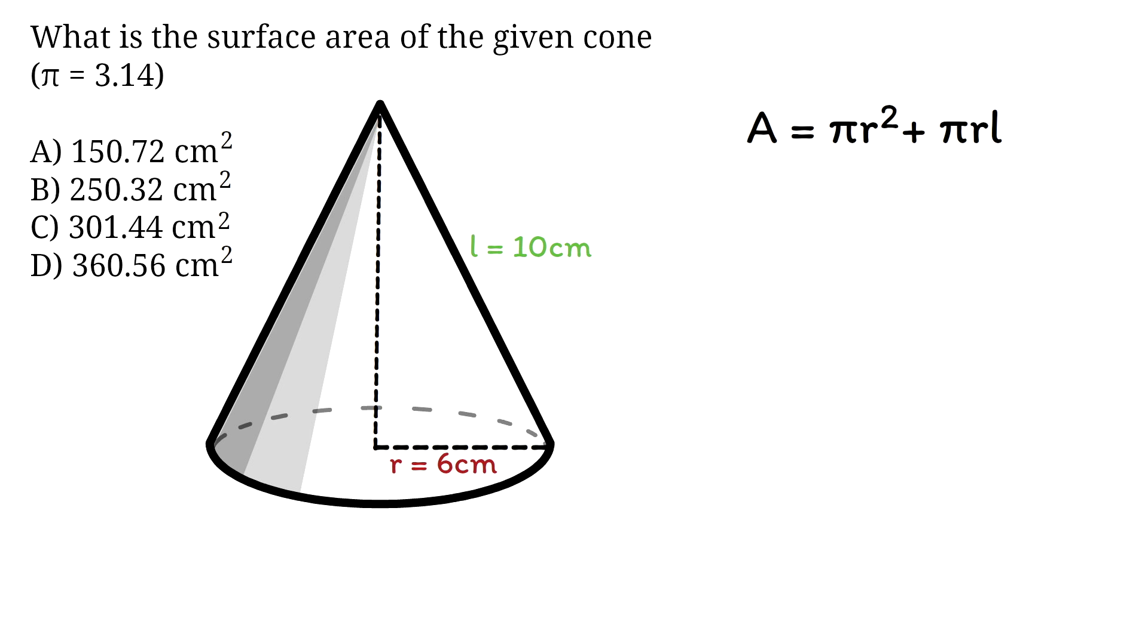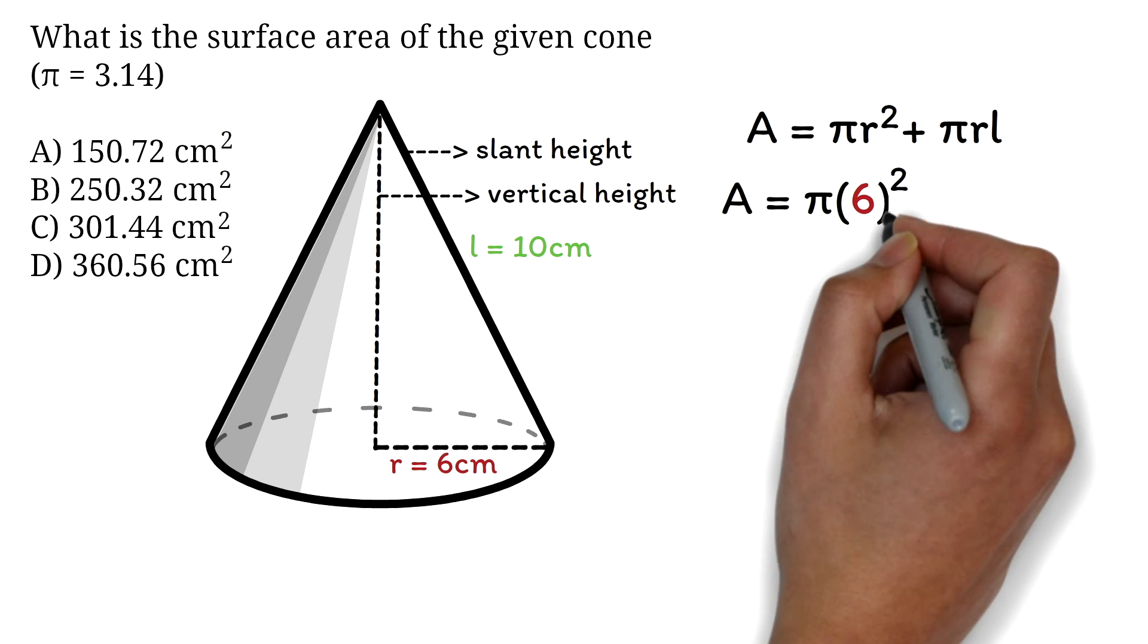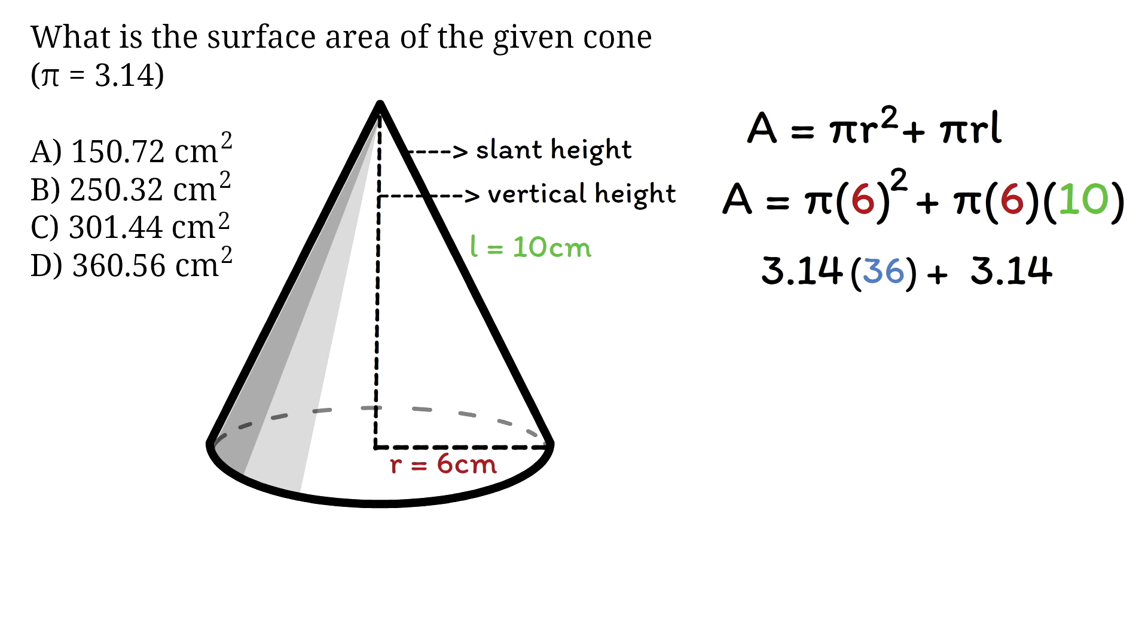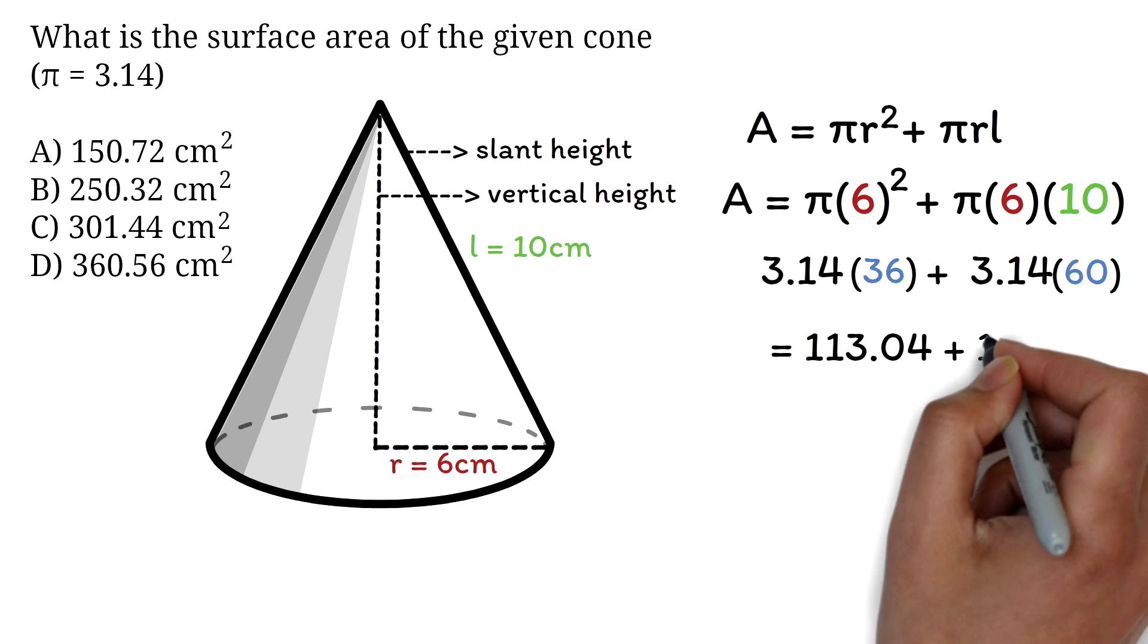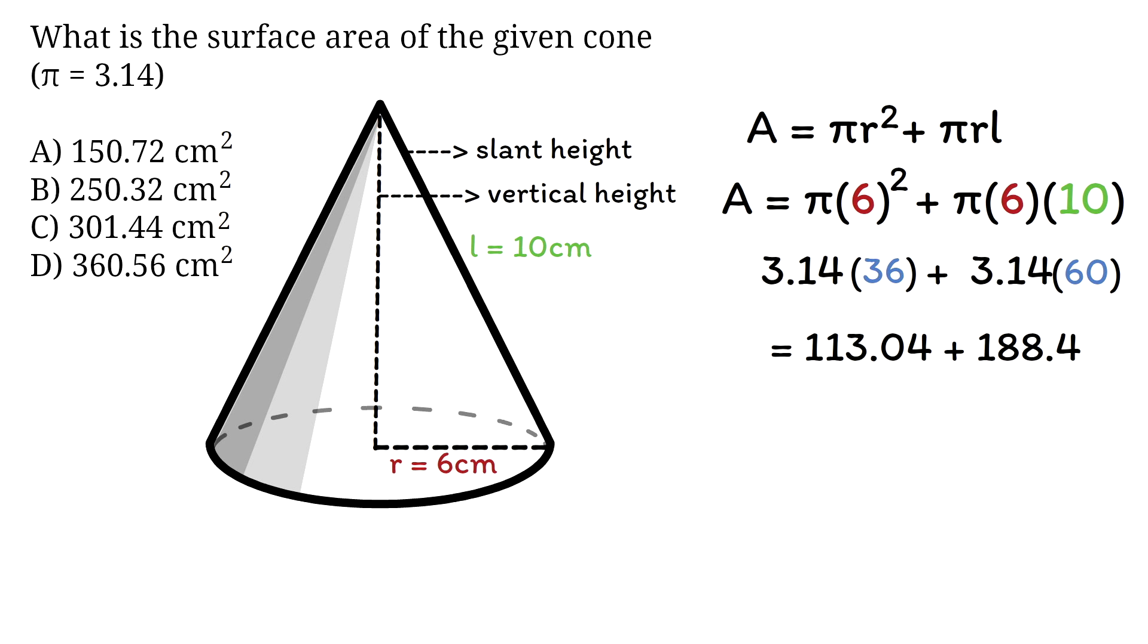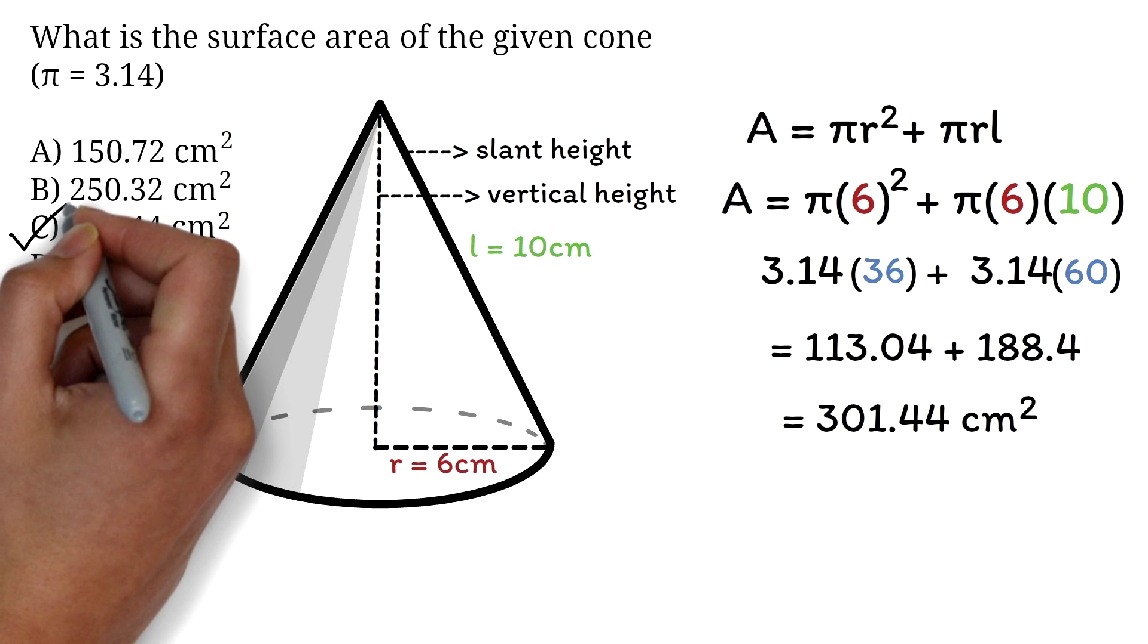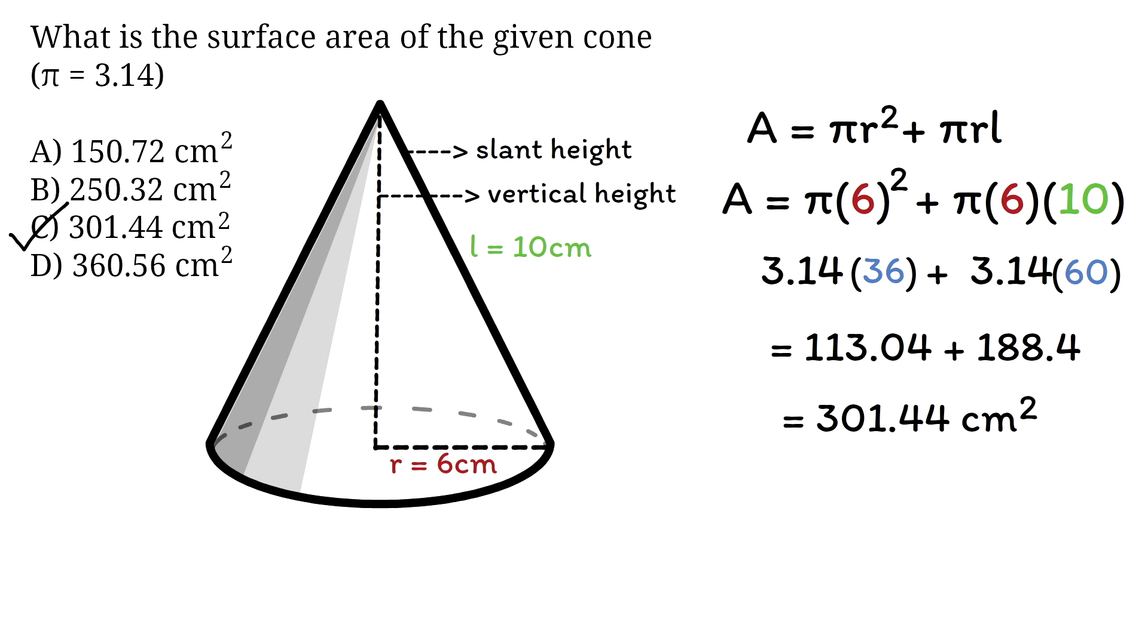From the figure, our radius is 6 cm and slant height is 10 cm. Please be careful about the slant height. You are sometimes given the vertical height, not the slant height. We plug these values into our formula. We calculate π times 6² plus π times 6 times 10. π is 3.14. 6² is 36 and 6 times 10 is 60. So we have 3.14 times 36 plus 3.14 times 60. We work this on the calculator to get 113.04 plus 188.4. Summing these up, the total surface area becomes 301.44 square centimeters. Hence, the correct answer is C, 301.44 square centimeters.